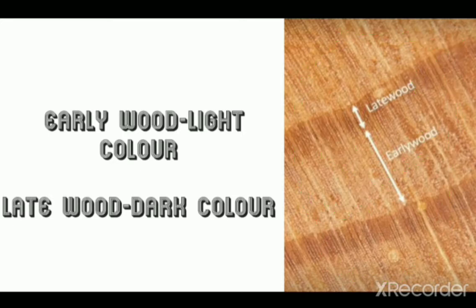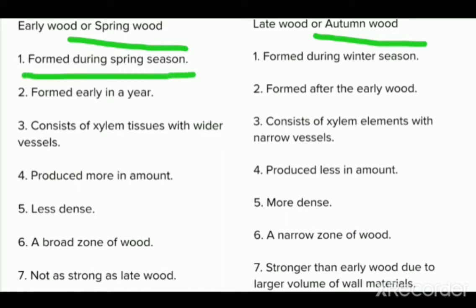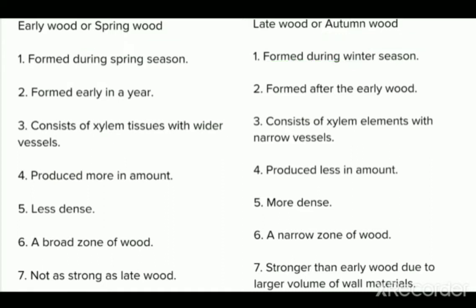Now we will understand early wood and late wood through some important facts. First, early wood is also known as spring wood, and late wood is also known as autumn wood. Early wood is known as spring wood because it forms during the spring season, and late wood forms during the winter season. Many physiological and environmental factors are responsible for the formation of early wood and late wood structures, and season-wise these wood rings or wood structures are formed in the stem.